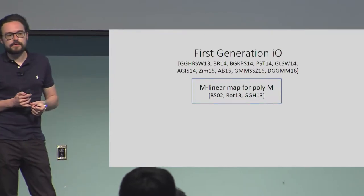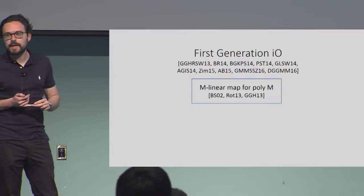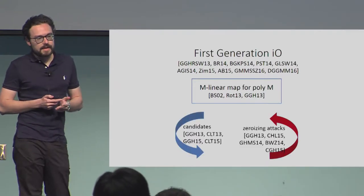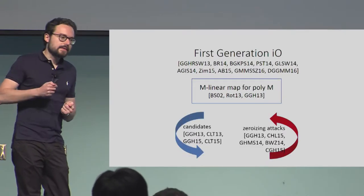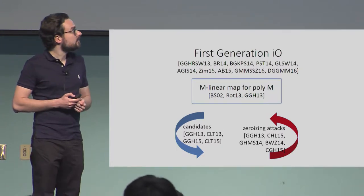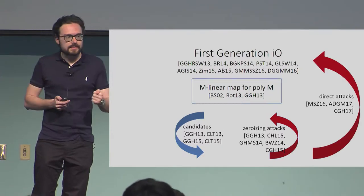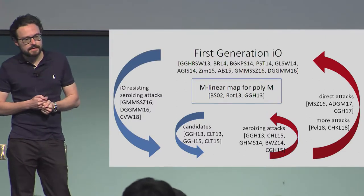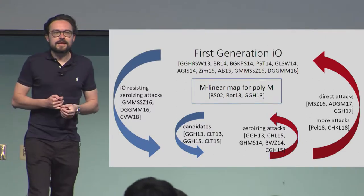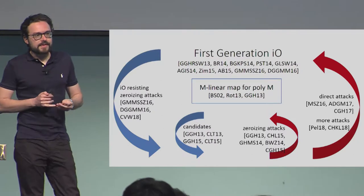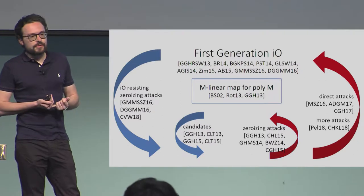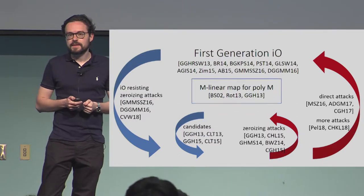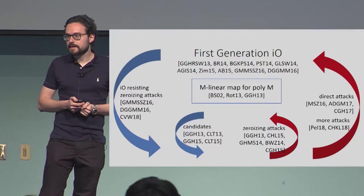First constructions of IO relied on multilinear maps, which are themselves a very complex object. This has led to many candidates for multilinear maps and attacks on these candidates, new candidates, new attacks, and so on — also direct attacks on these constructions and new constructions that try to resist these attacks and more attacks. This is an unsatisfactory situation, so what we would like to do is avoid using multilinear maps and instead rely on assumptions that are easier to analyze and understand.